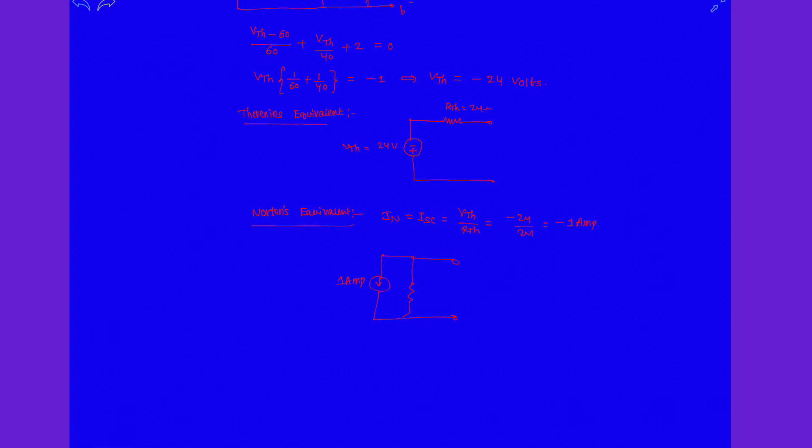This is 24 ohm resistance. These are the terminals A and B. This is the terminals A and B. These two are the Thevenin equivalent and Norton equivalent. That's it, thank you.